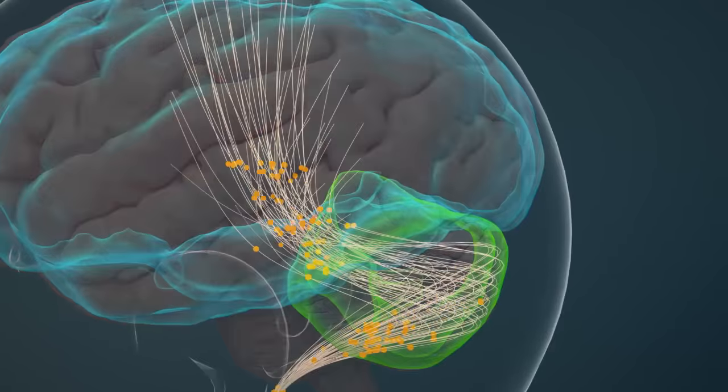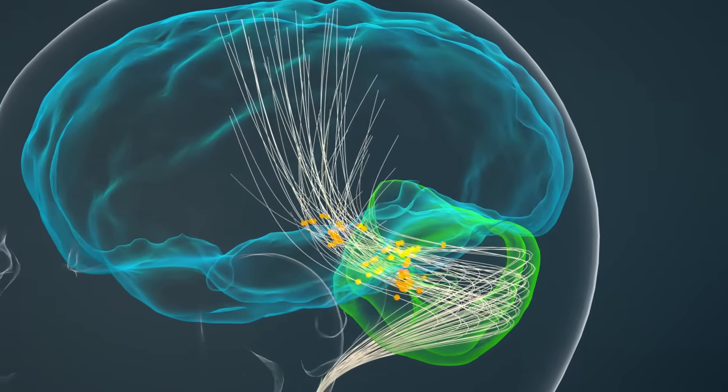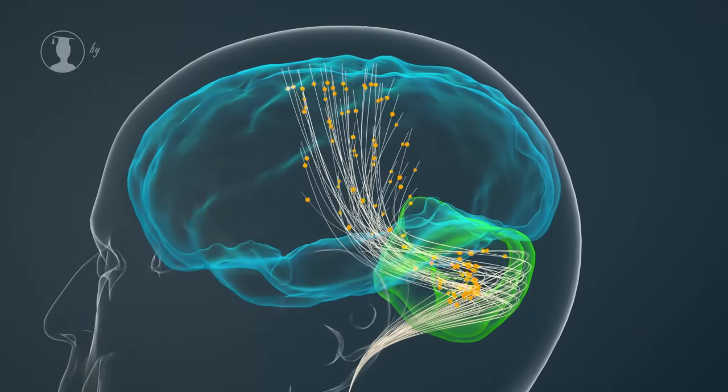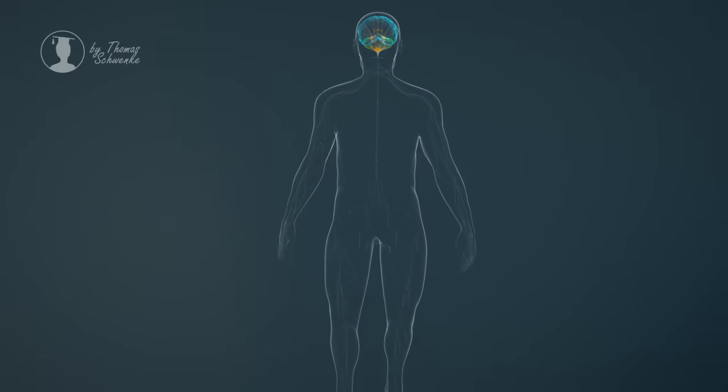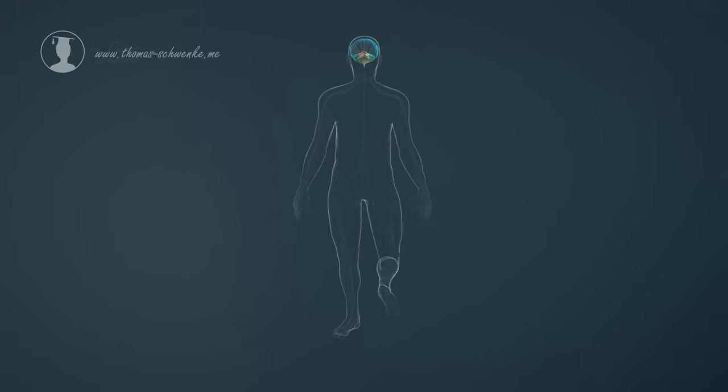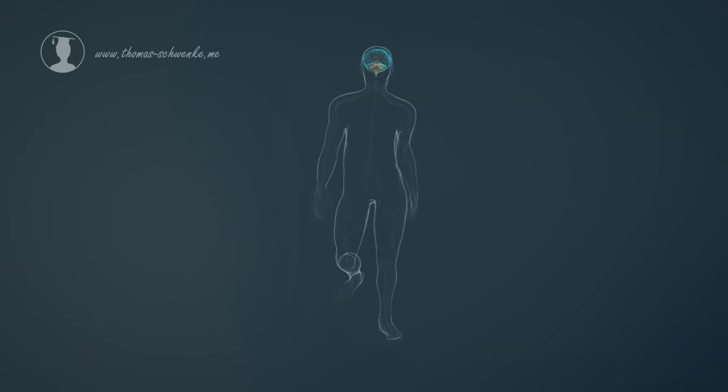With the help of its nerve cells, the cerebellum is able to transform planned movement patterns of the cerebrum into coordinated movement sequences. Without the cerebellum, harmonious movements such as walking would not be possible.